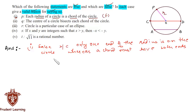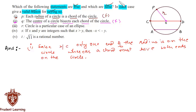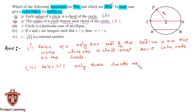The second statement: the center of a circle bisects each chord of the circle. This statement is also false because only those chords are bisected which pass through the center — that is, only the diameter is bisected by the center — whereas all other chords are not bisected by the center.